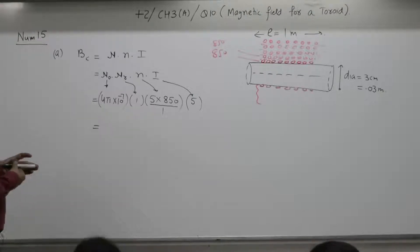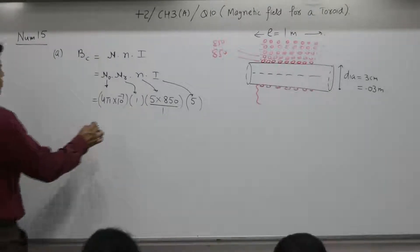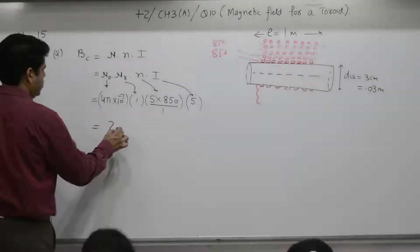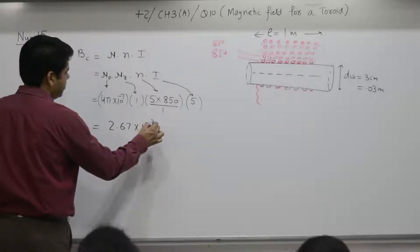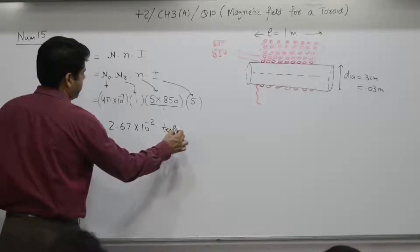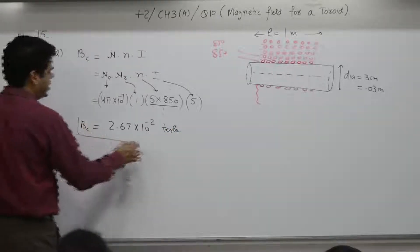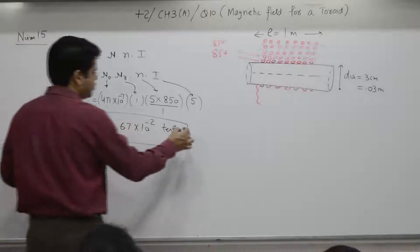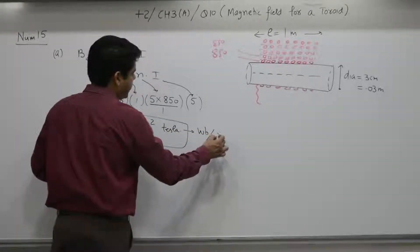The answer is 2.67 × 10⁻² tesla, which is also written as weber per meter square.